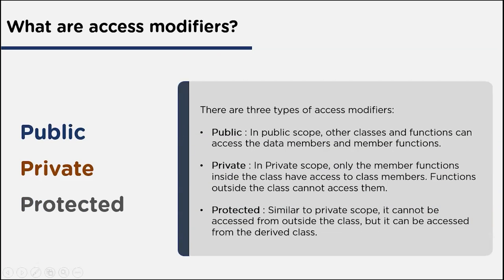In the public access modifier, other classes and functions can access the data members and member functions. For example, a park is a public property — anybody can go to the park because it's public, and nobody needs to take permission from anyone to access it.